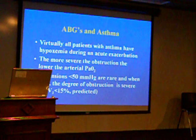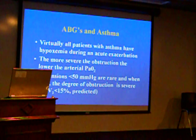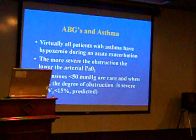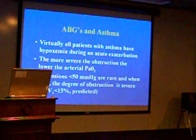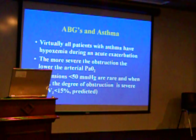Virtually all patients with asthma have hypoxemia during acute exacerbation. The more severe the obstruction, the lower the PaO2. Here's a little pearl: it is very, very unusual to see severe hypoxemia with asthma alone. It just doesn't happen. A PaO2 in the 70s or 60s, yeah. 50s — I get a little nervous and worried. Beyond that, it just isn't asthma.